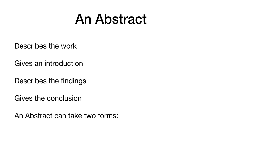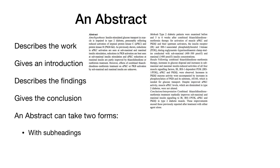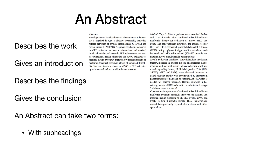Generally we find that there are two types of abstract. There is the abstract with subheadings, where there are specific headings such as aims and hypothesis, methods, results, etc. And then there's also an abstract without subheadings.